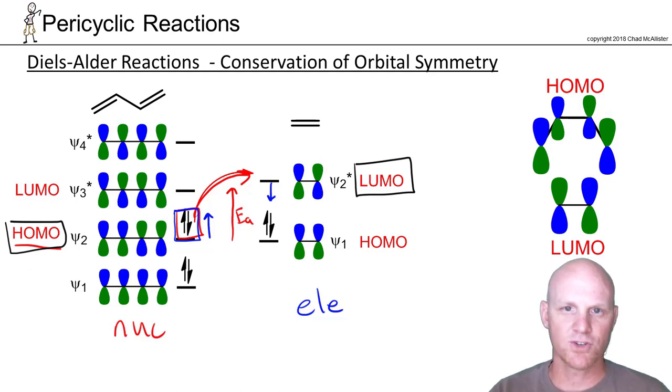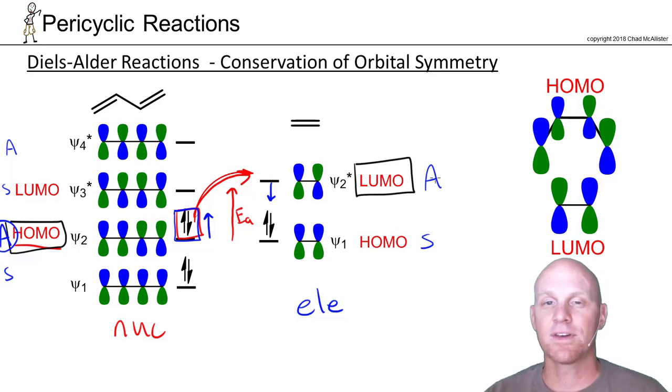If you recall here, ψ1 is symmetric, ψ2 is antisymmetric, ψ3 goes back to being symmetric, and ψ4 is back to antisymmetric. The big thing is I needed to know that it was antisymmetric for the HOMO here, and I'm going to see how that compares to the LUMO of the dienophile. ψ1 here is symmetric, and ψ2 is also antisymmetric, so the key is they're both antisymmetric.